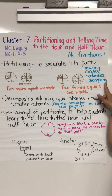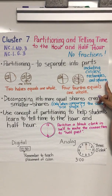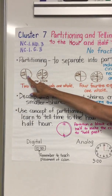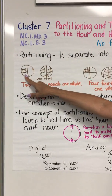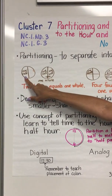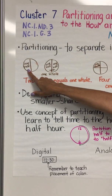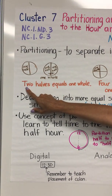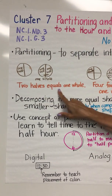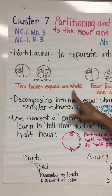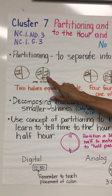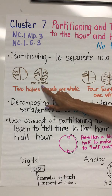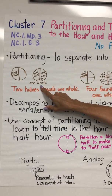Key vocabulary is very important here as well. Here we are using a circle to demonstrate partitioning it into two halves. This is considered one half, and we are understanding that two halves equals one whole. One half and one half come back together to equal one whole.